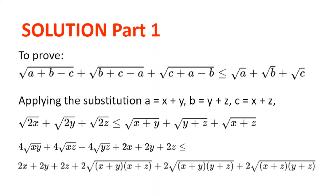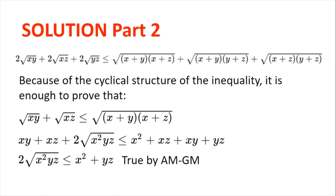Squaring both sides, we get 4 times the square root of xy plus 4 times the square root of xz plus 4 times the square root of yz plus 2x plus 2y plus 2z, less than or equal to 2x plus 2y plus 2z plus 2 times the square root of (x plus y)(x plus z) plus 2 times the square root of (x plus y)(y plus z) plus 2 times the square root of (x plus z)(y plus z), which simplifies to 2√(xy) plus 2√(xz) plus 2√(yz) less than or equal to √((x+y)(x+z)) plus √((x+y)(y+z)) plus √((x+z)(y+z)).